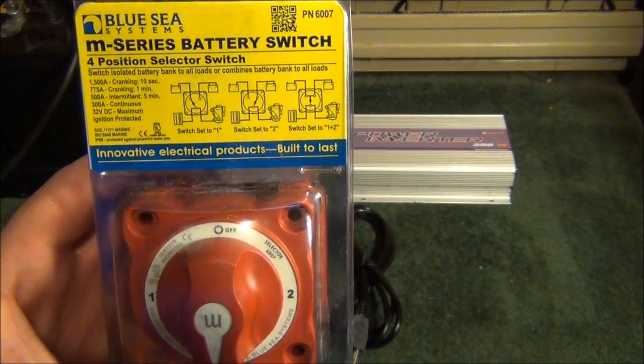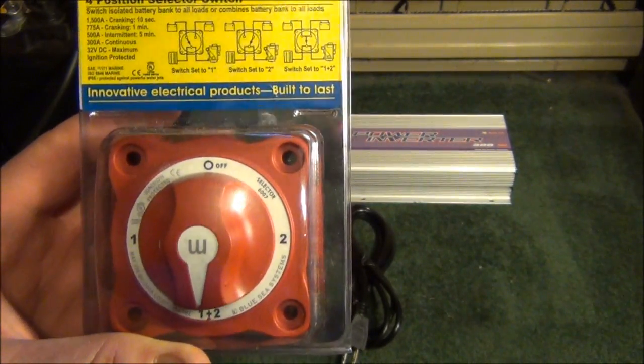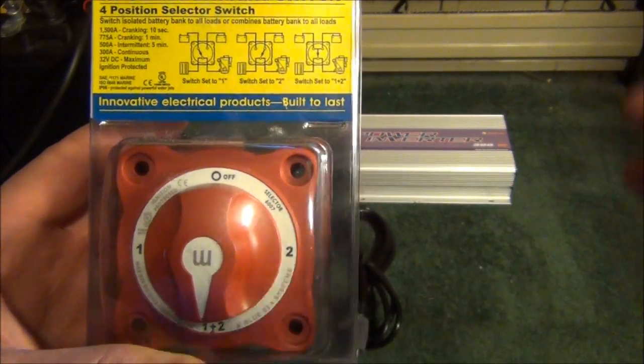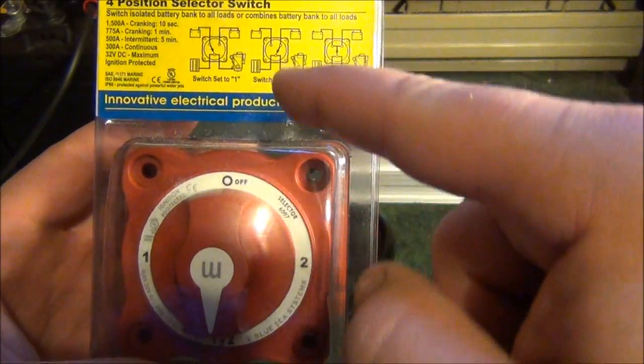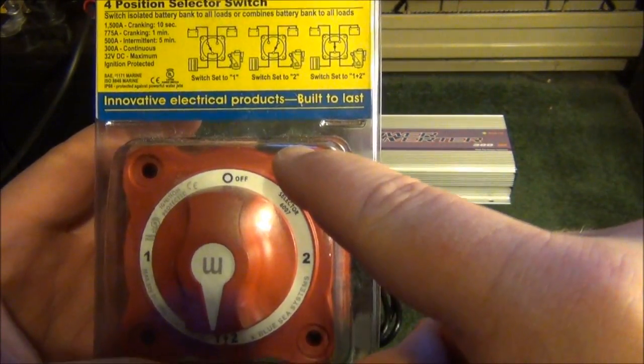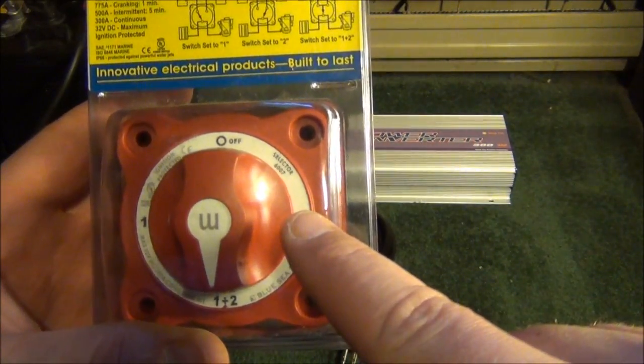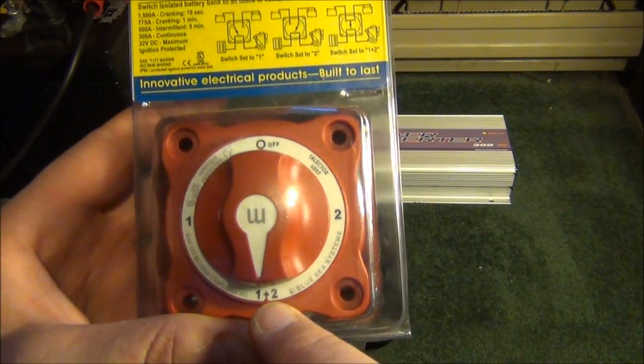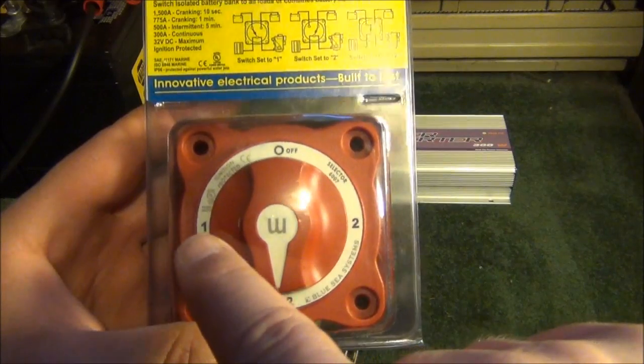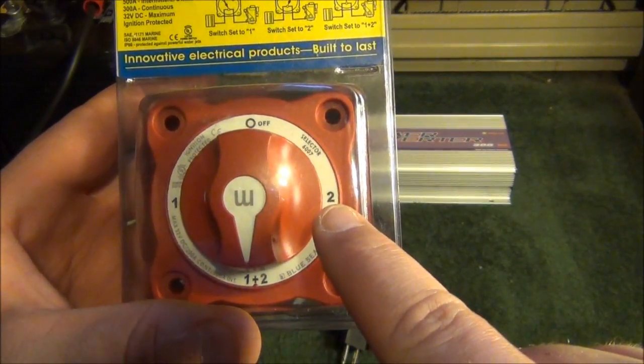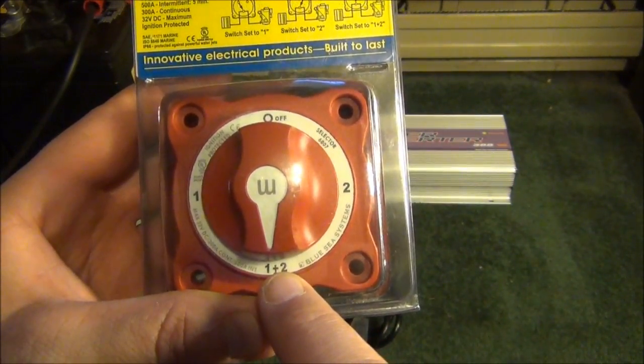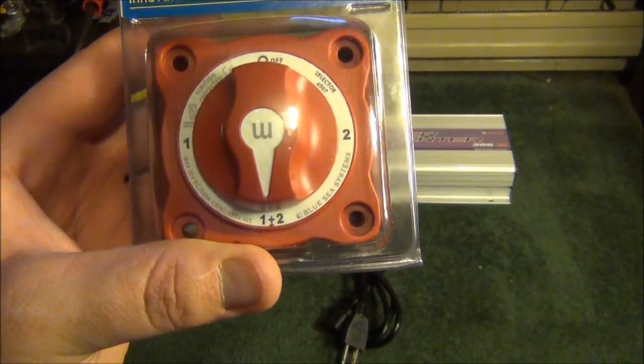For some of you that don't know, this is a switch for power. Basically, power comes in, I can have it just completely shut off, go to 1, 2, or both. So what I'm going to do is put my battery bank on 1, the grid tie inverter onto 2, and then 1 and 2 would be where power would go to both of them equally.